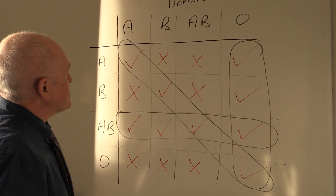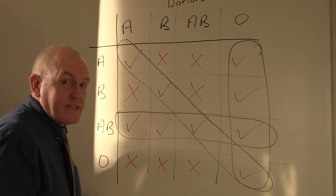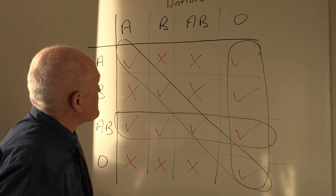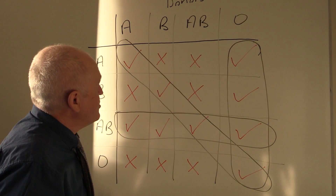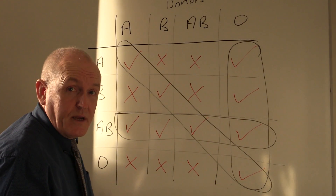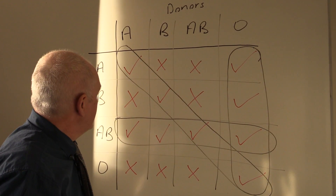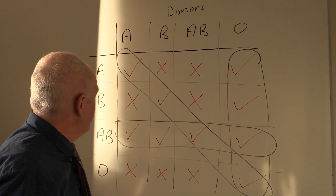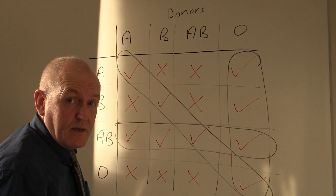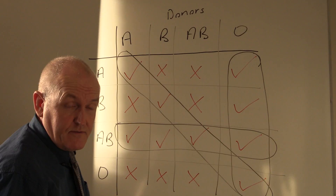Of course when we take the Rhesus factor into consideration, the true universal donor will be O negative, and the true universal recipient will be AB positive.